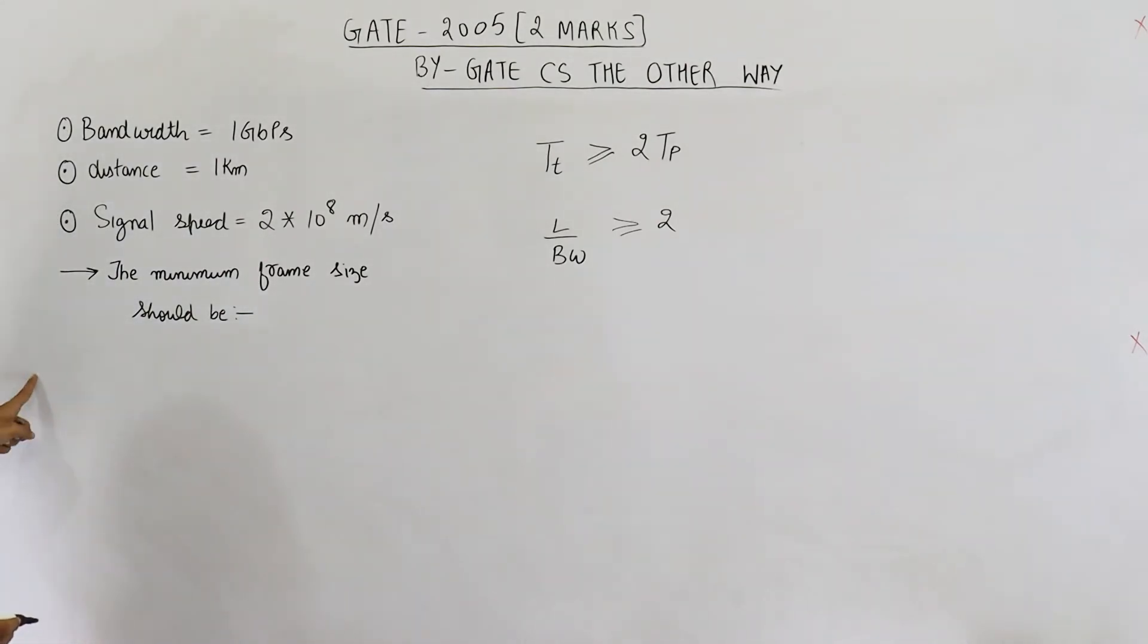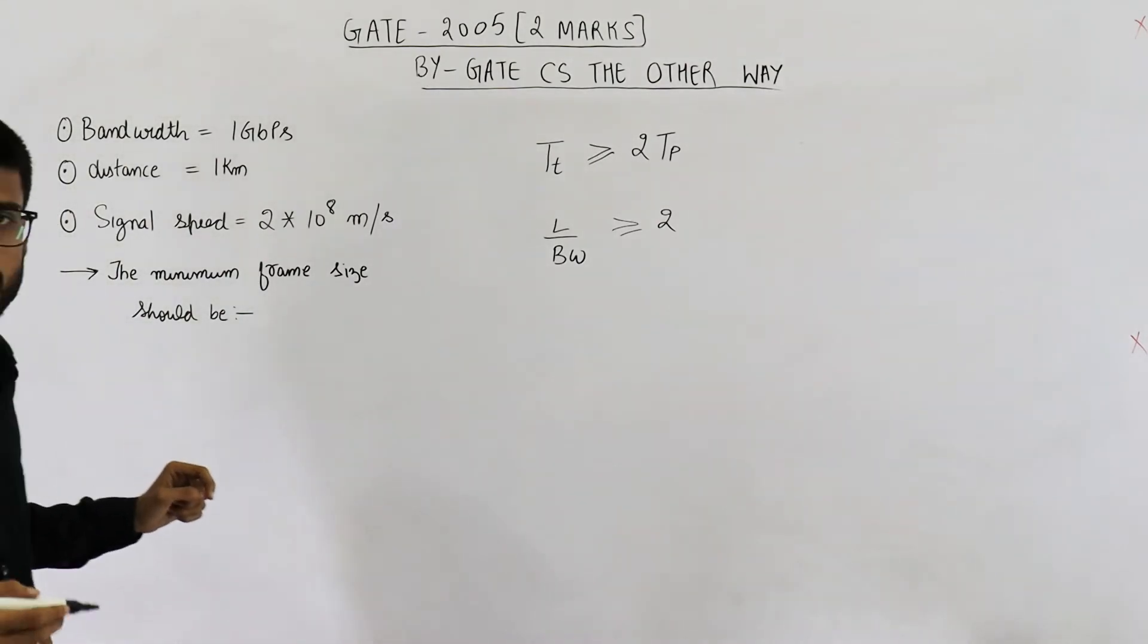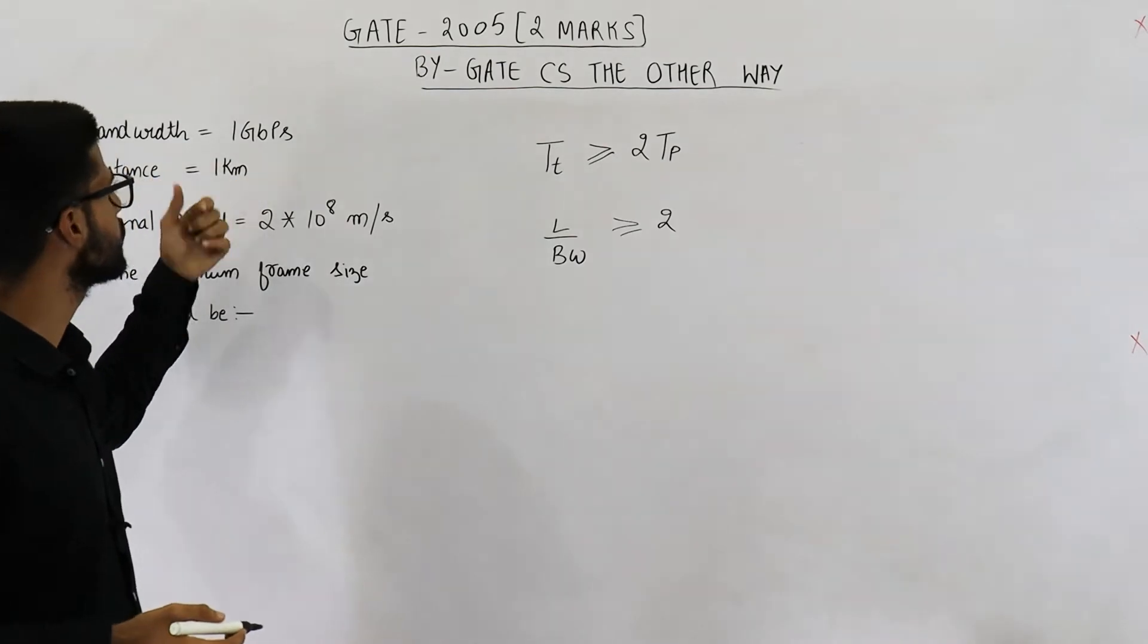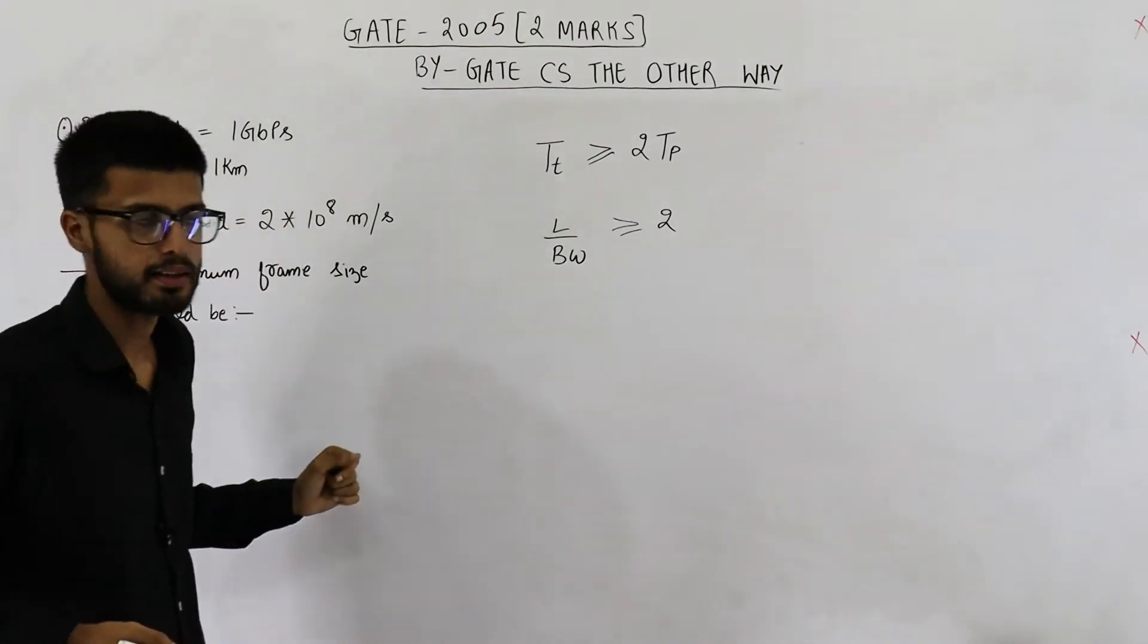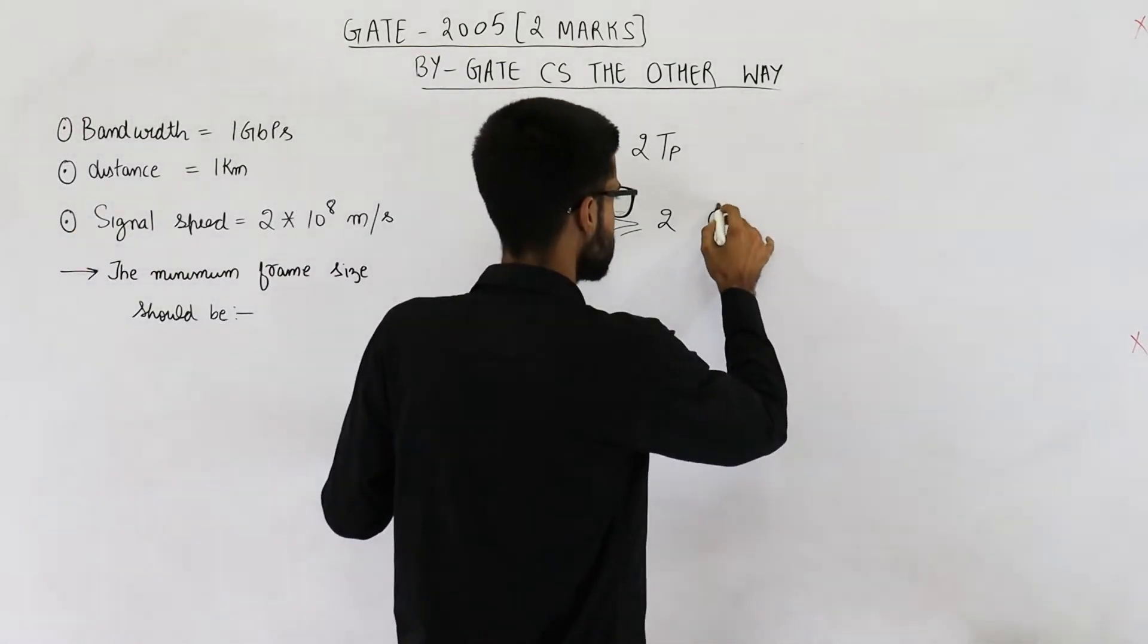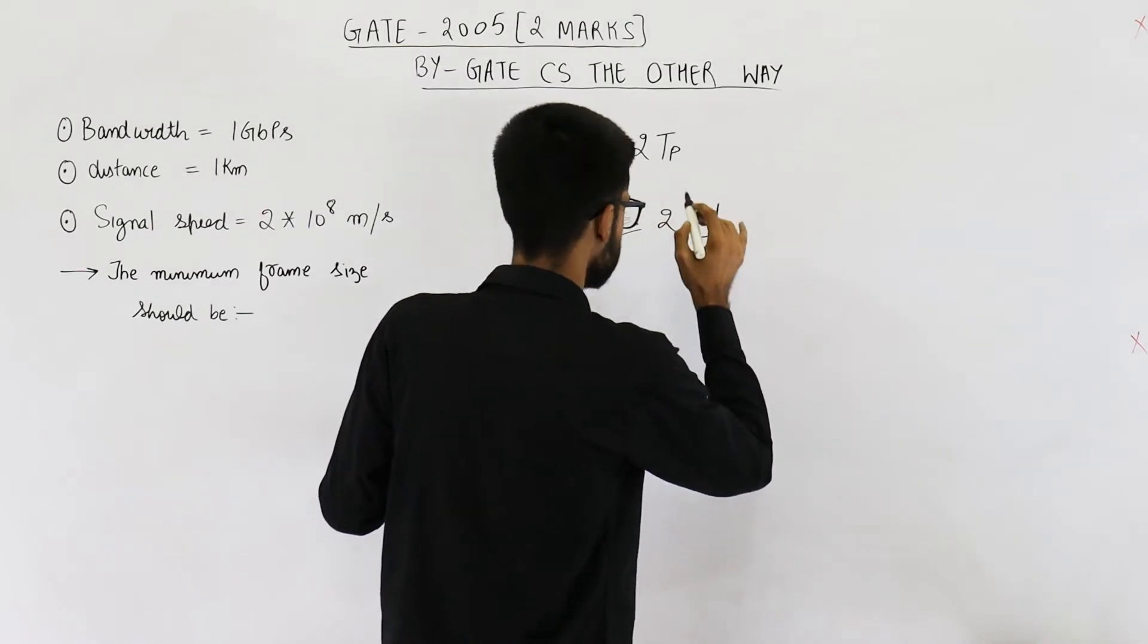Propagation delay is also not directly given. But it can be written as distance between the nodes divided by the signal speed. So it is distance divided by the signal speed.